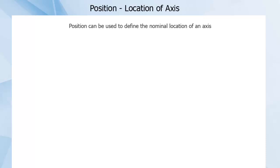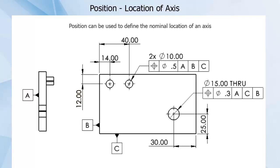Position can be used to define the nominal location of an axis for features such as holes or pins.